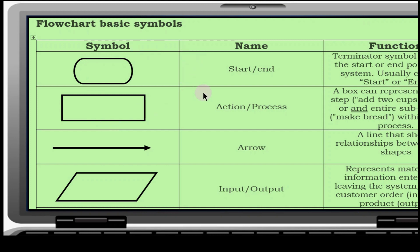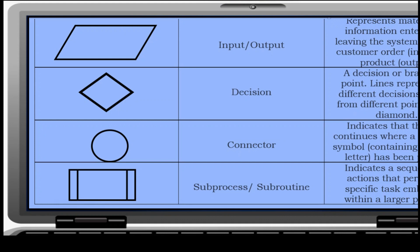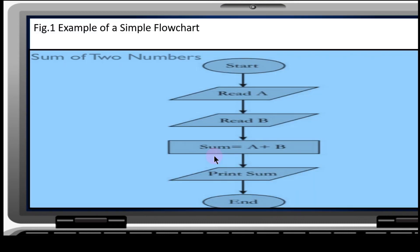And here are the other symbols of flowchart: the starting end, the action or the process, the arrow, the output and input, the decision, the connector, and the subprocess and subroutine. Here's the example of flowchart.